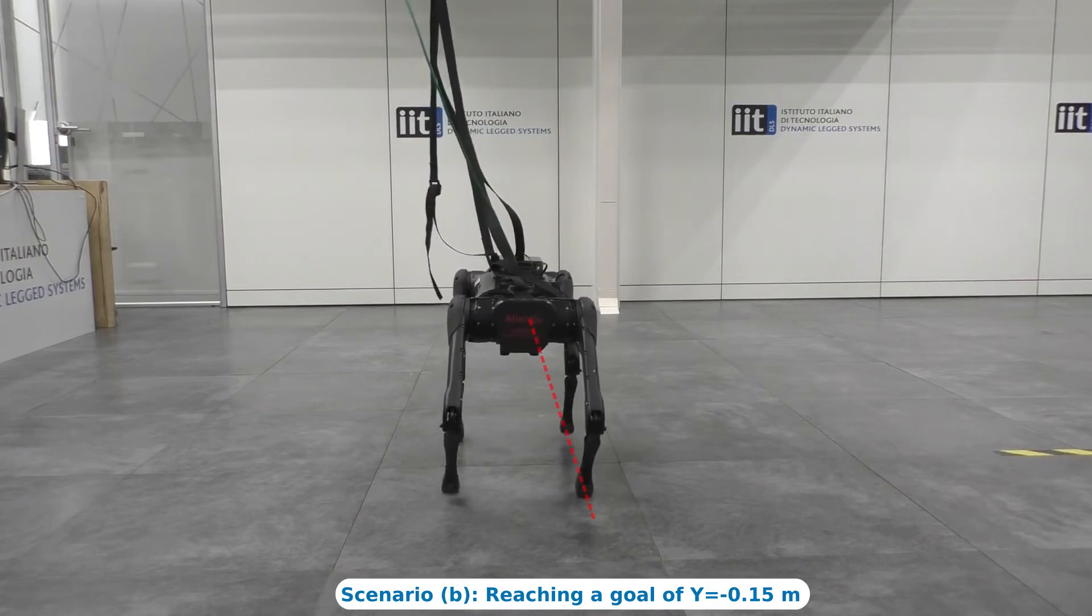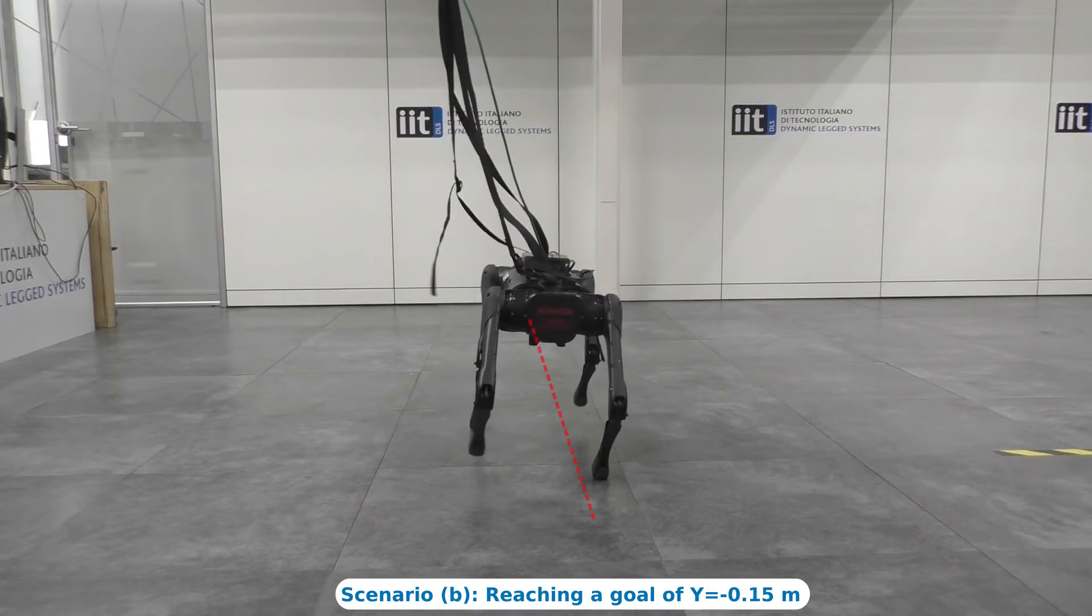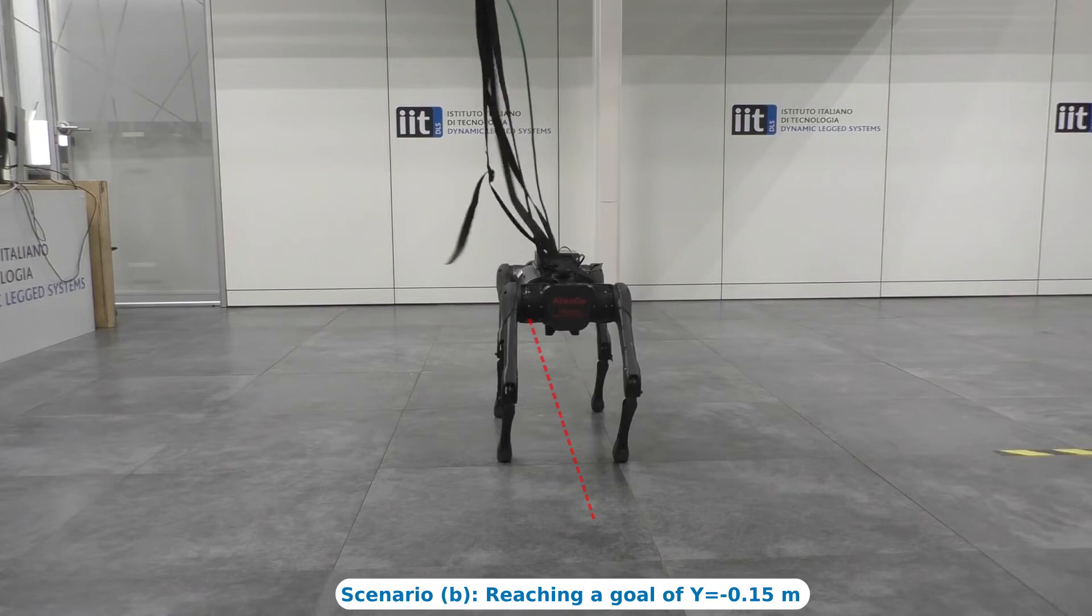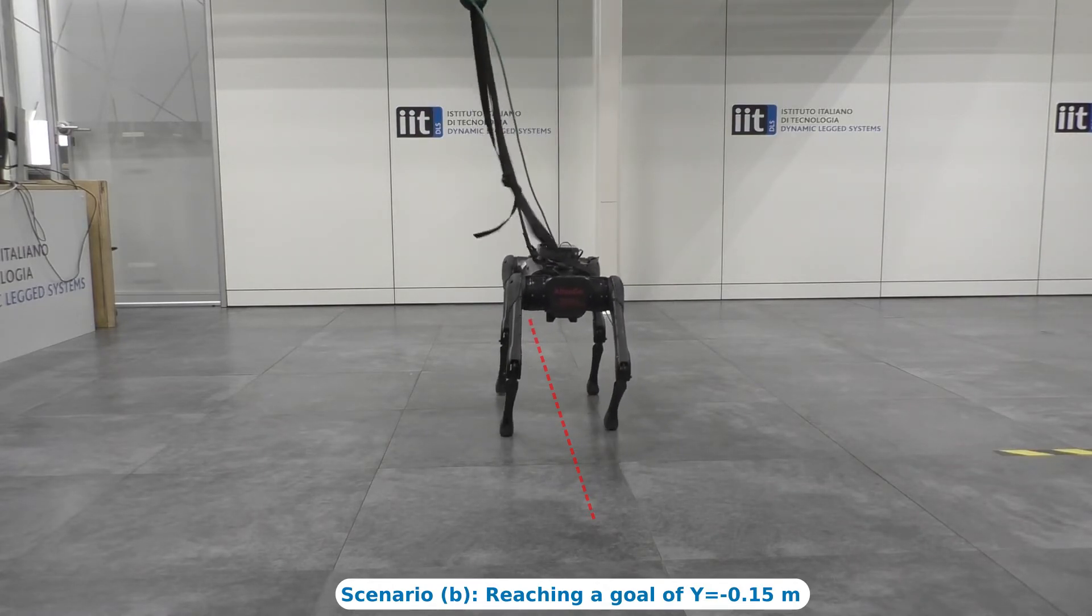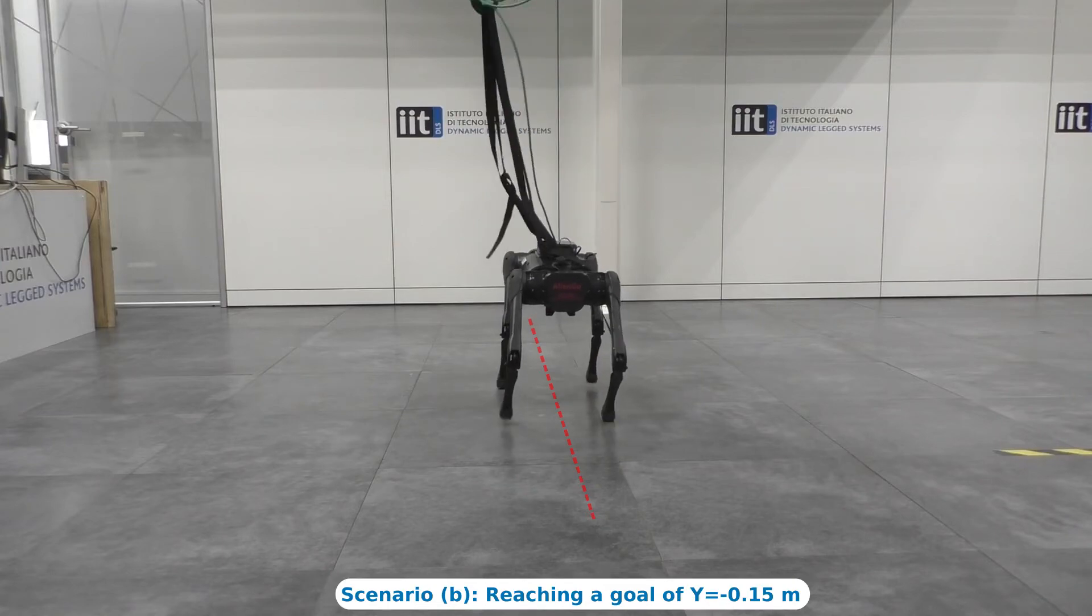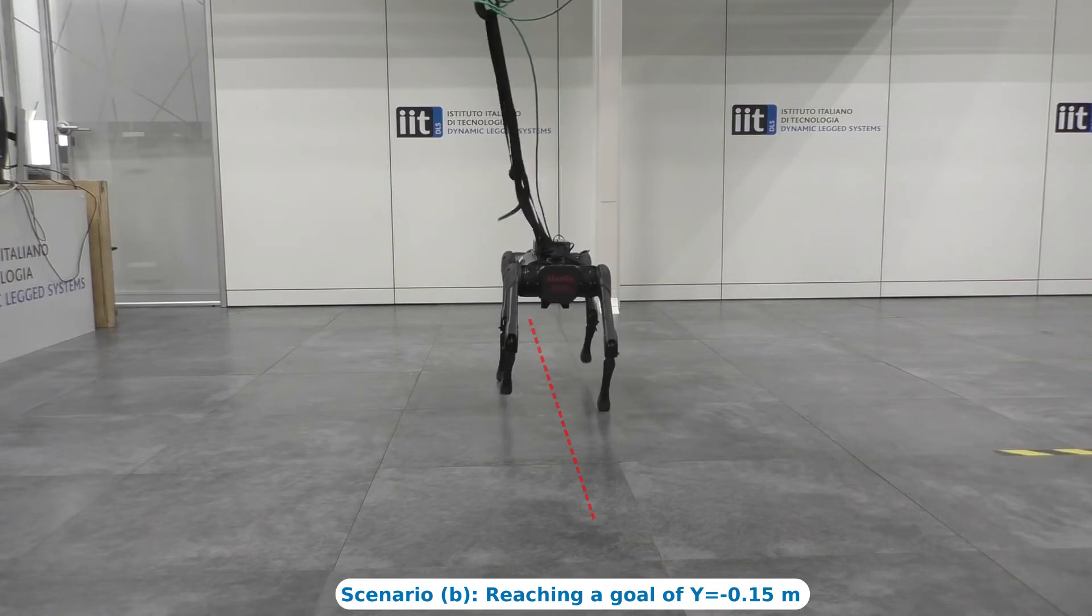In this experiment, we perform the reaching task without guaranteeing the response time. The velocities taken from the reference generator are also used to compute the foothold locations that drive the robot toward the lateral goal of 15 centimeters.